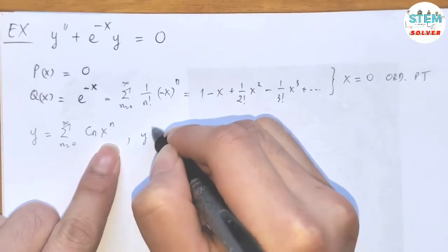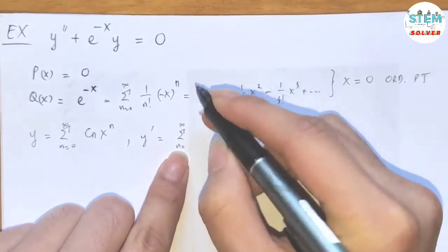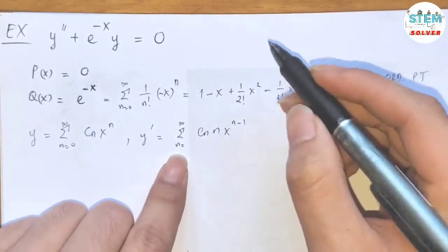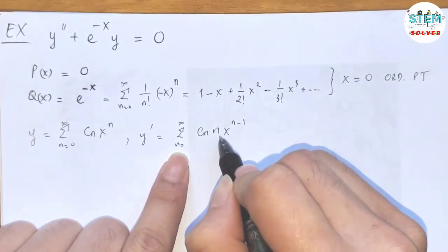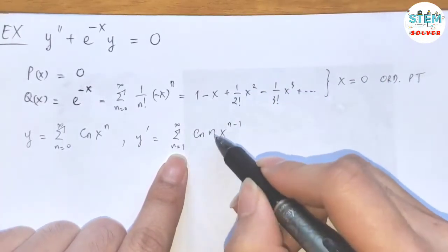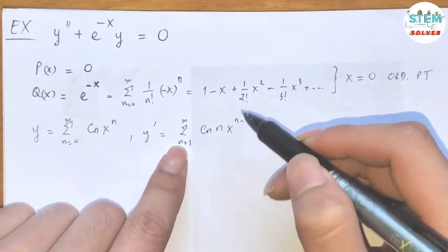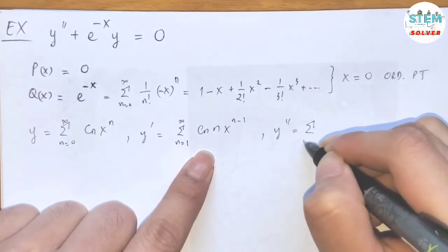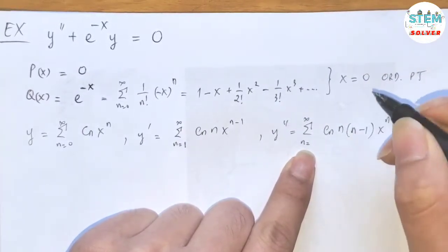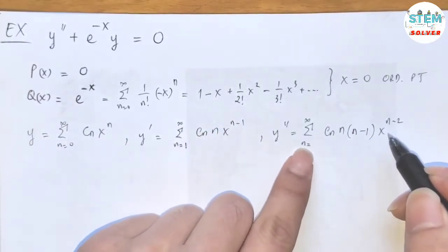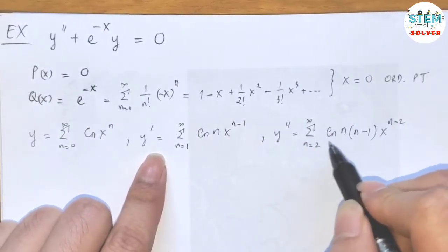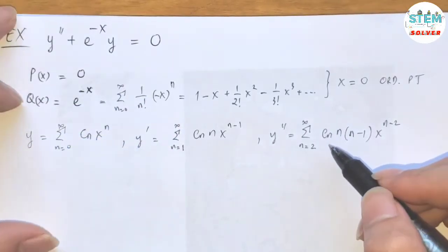Take the first derivative: power series from 1 to infinity of c_n times n times x to the n minus 1. Always check if n equals 0 is valid or not — since plugging in 0 makes the term zero, you let n start at 1. Then take the second derivative: power series from 2 to infinity of c_n times n times n minus 1 times x to the n minus 2. If you plug in either 0 or 1, the term becomes 0, so n starts from 2.